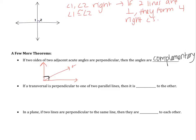Next theorem: if a transversal is perpendicular to one of two parallel lines, then it is blank to the other. So I'm going to start out with parallel lines and mark that they're parallel. Now it says a transversal is perpendicular to one — then hopefully you can figure out it is also going to be perpendicular to the other.